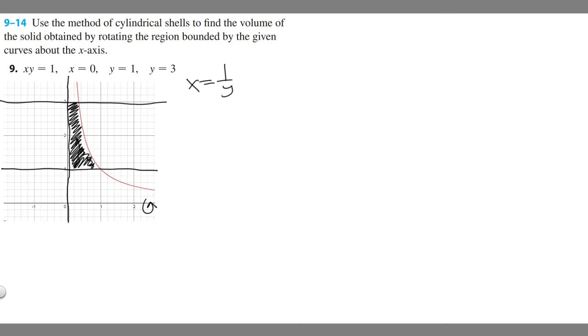You need to know that the formula for cylindrical shells is the volume equals 2π times the integral from a to b of your radius times your height. This is the formula we're going to use. If we just rewrite it here, we first want to find what a and b are.